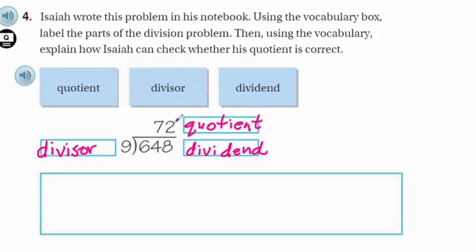Using the vocabulary, explain how Isaiah can check whether his quotient is correct. I have to use those words. Well, Isaiah could check his work by multiplying the divisor and the quotient. If the quotient is correct, then the problem should equal the dividend. Let me go ahead and write those notes down.